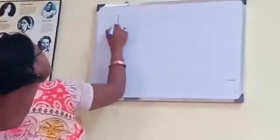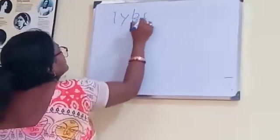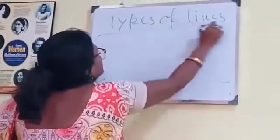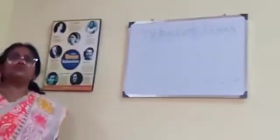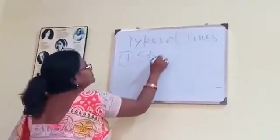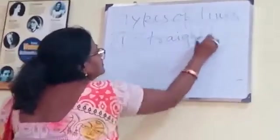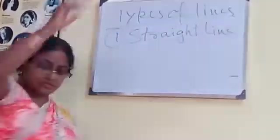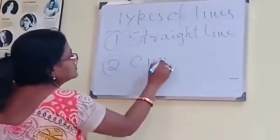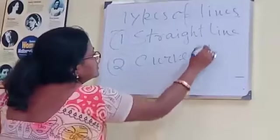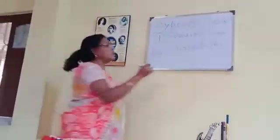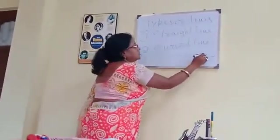Types of line. Lines are of two types. Number one is straight line, and number two is curve line. Curve line is also called a curve. This is a curve line.